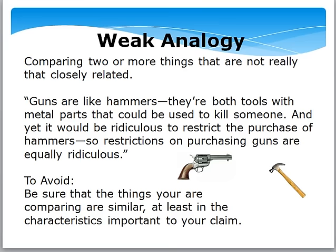Another logical fallacy is the weak analogy. This is when you're comparing two or more things that are not really that closely related. For example: guns are like hammers — they're both tools with metal parts that could be used to kill someone, and yet it would be ridiculous to restrict the purchase of hammers, so restrictions on purchasing guns are equally ridiculous.